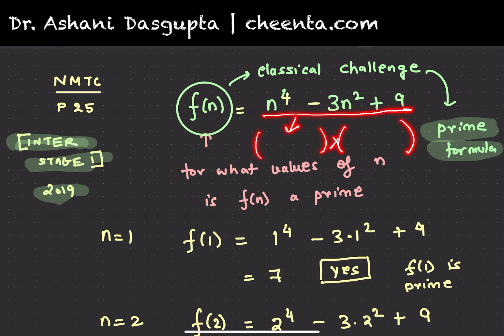then as long as these are not ones, these two factors are not ones, this particular expression cannot be a prime because then we have broken it down into two factors. And prime numbers can only be broken down into two factors if one of them is one and the other one is a prime itself.